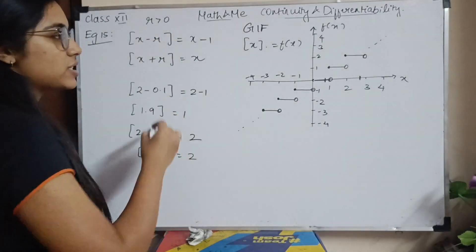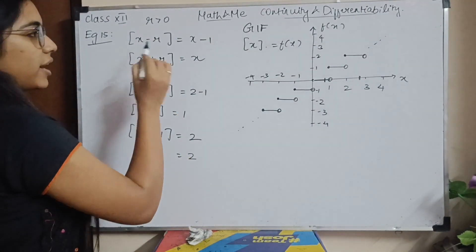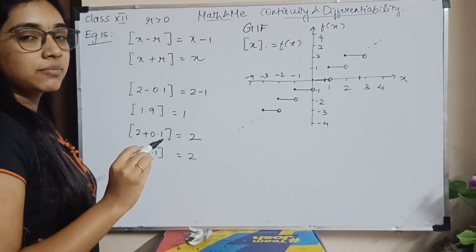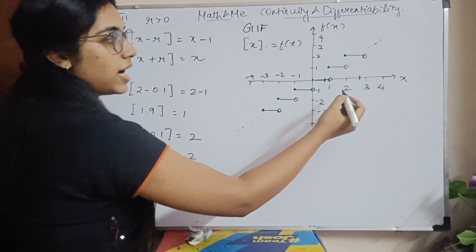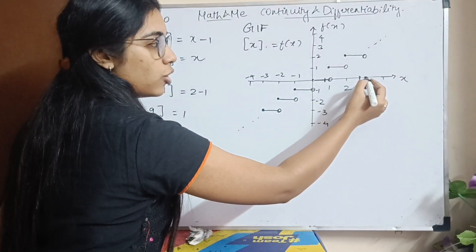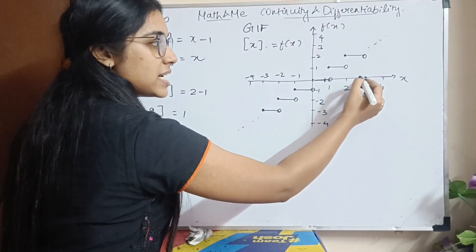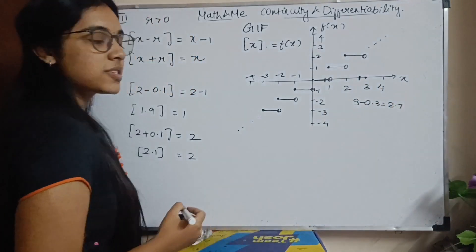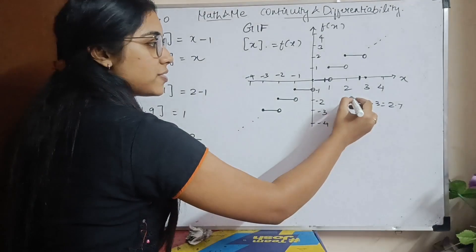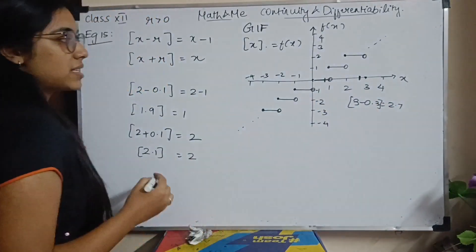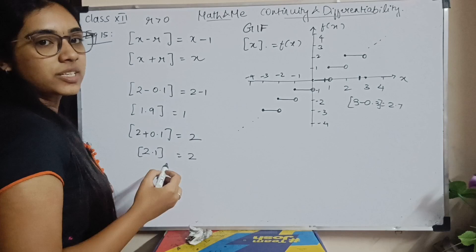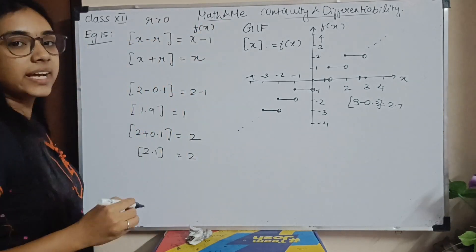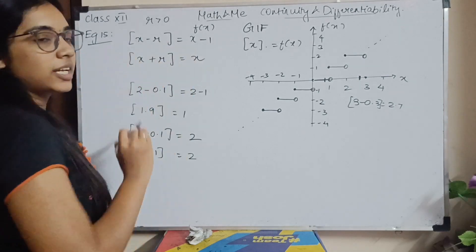How do you interpret this in terms of a function? You have x minus some r, where r is some value greater than 0. For example, if x is 3, then 3 minus 0.3 gives 2.7. That is how you interpret it — when you have x minus r, f of x is x minus 1.